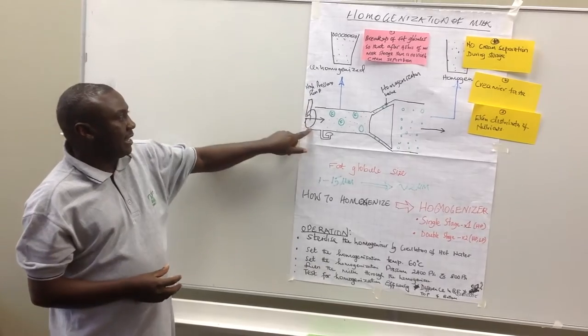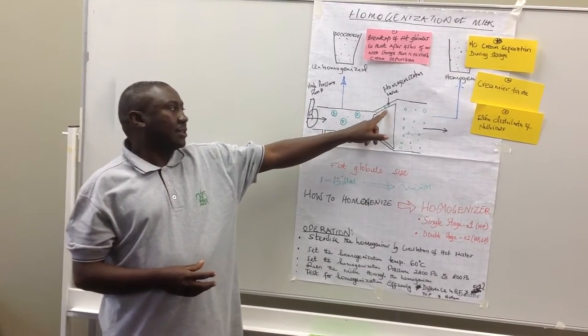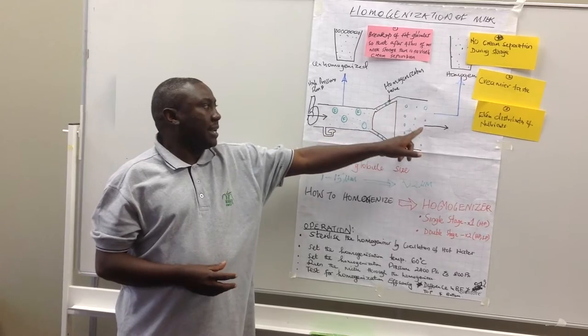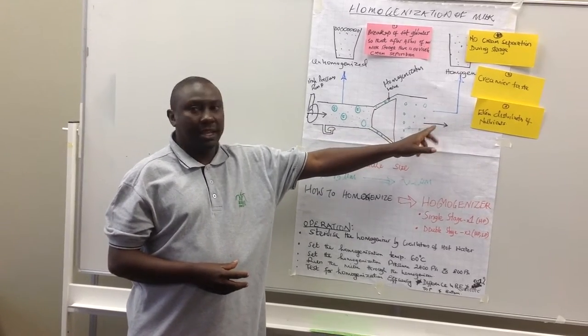The milk gets into the homogenizer, passes through the orifice, and when it comes out, it's already homogenized.